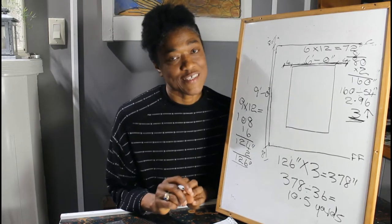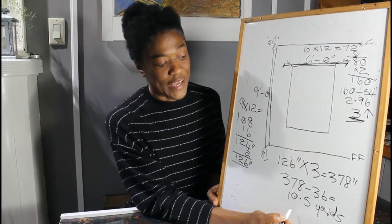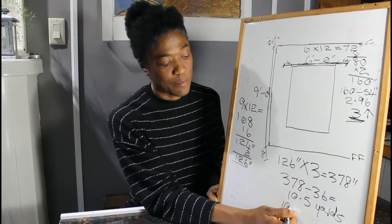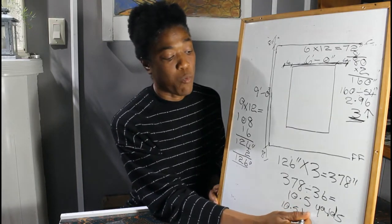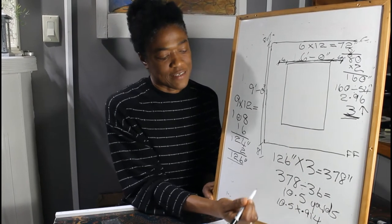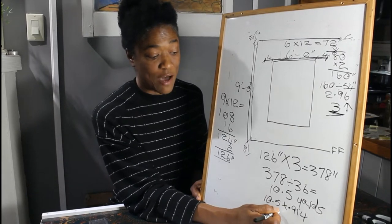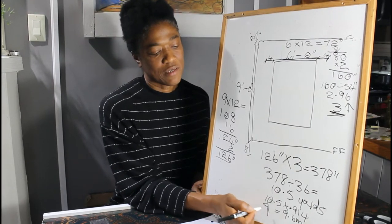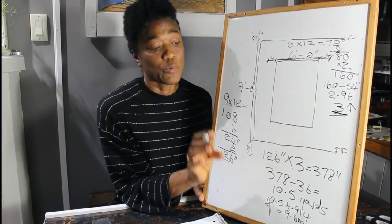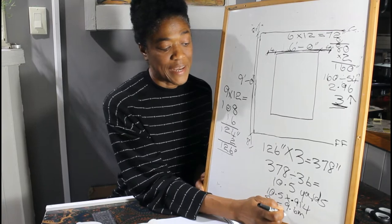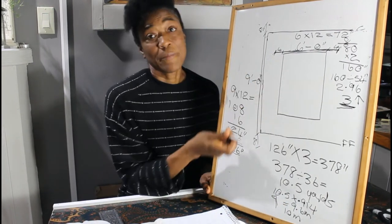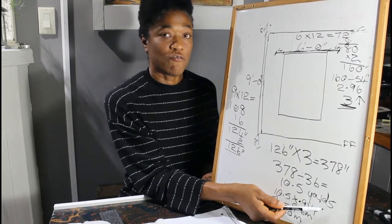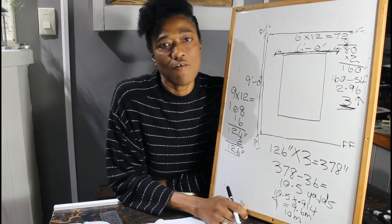If your fabric store sells the fabric in meters, then we can go ahead and convert our 10.5 yards to meters by multiplying by 0.914. And that is how we get the number of meters that we need. And that will be 9.6 meters. Here we can go ahead and round up again. We always round up. We never want to round down. So we round up to 10 meters. So to make our drapery panels, we will need either 10.5 or 11 yards of fabric or 10 meters of fabric.